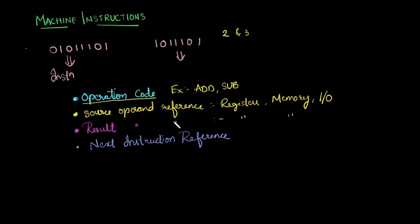Coming to this next instruction reference, after performing one operation or one instruction, the processor must go to the next instruction. So it must know the address or some kind of information to go to the next instruction. Generally we don't integrate this within our machine instruction because this is found in a special register called program counter. Program counter has the value of next instruction to be fetched and executed, so we don't bother about this for now.